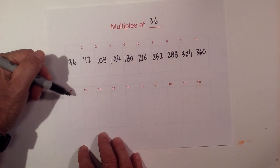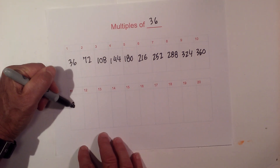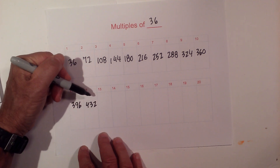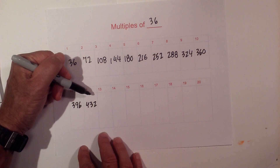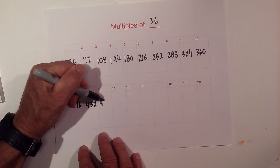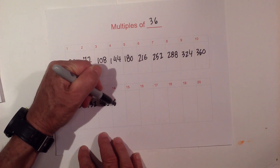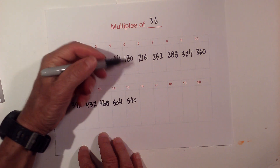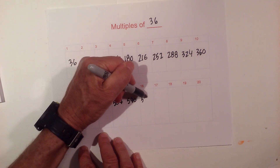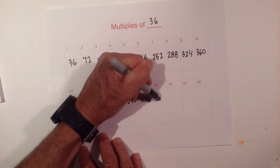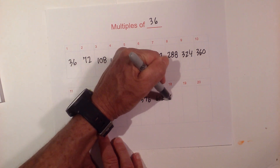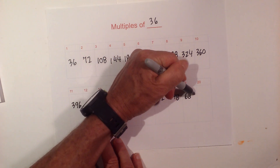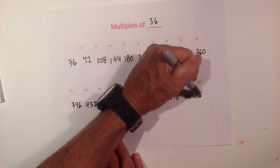Next we have 36 times 11 is 396. 432. And 36 times 13 is 468. Next we have 504. And we have 540. 36 times 16 is 576. 612. 648. 684. And 36 times 20 is 720.